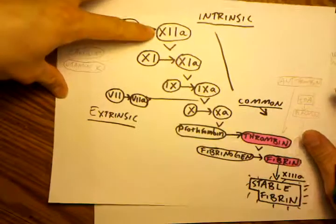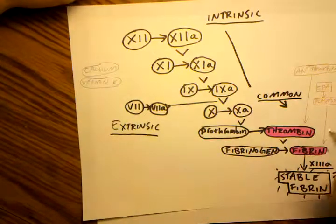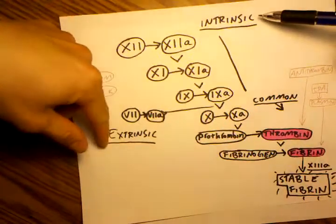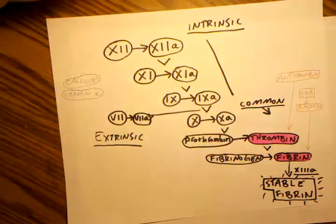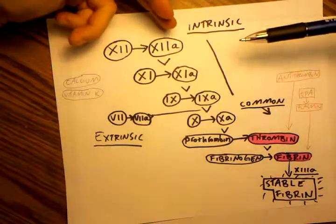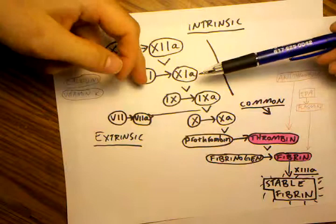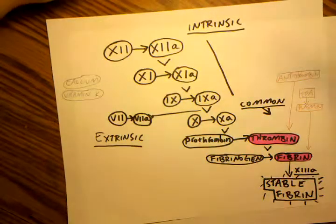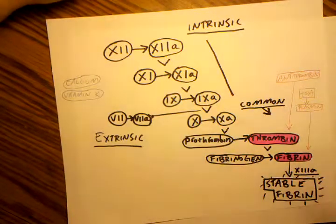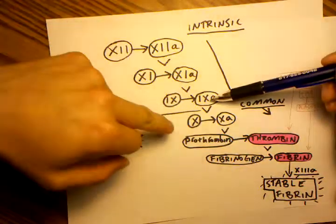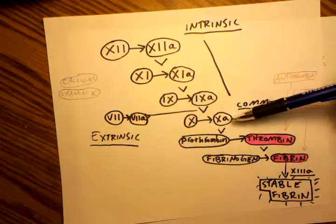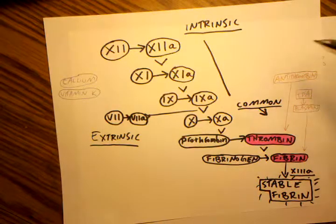But very briefly, intrinsic and extrinsic pathways start with the injury. In intrinsic, you got 12 turns into 12a which turns 11 into 11a which turns 9 into 9a. The extrinsic is much shorter. You just have 7 turning into 7a. But then at this point both of them turn 10 into 10a, and this is where the common pathway starts.